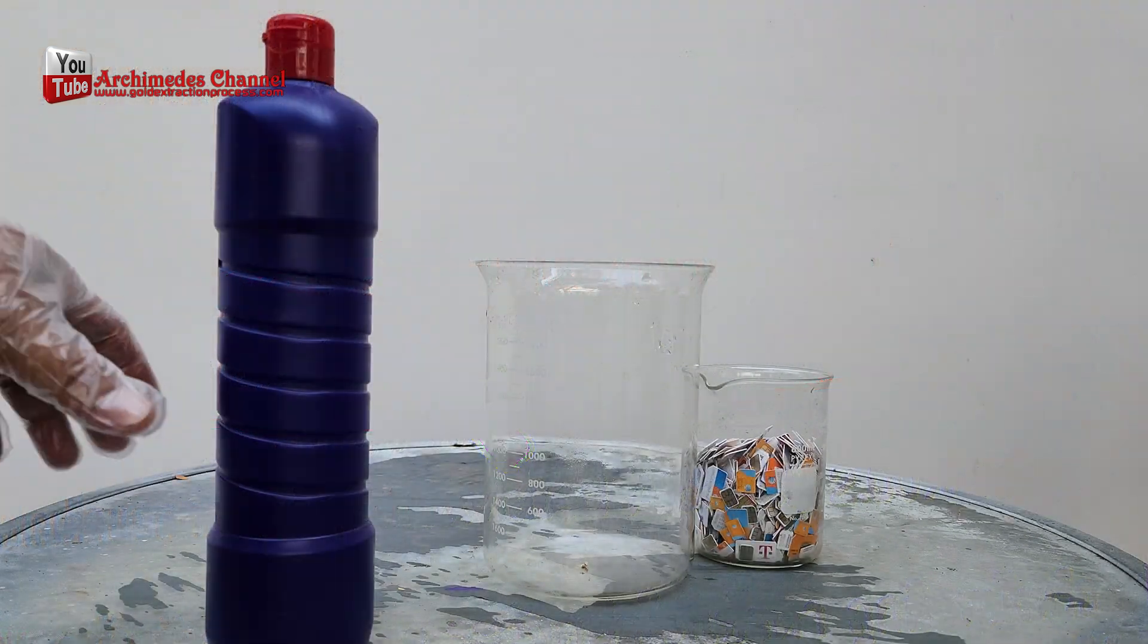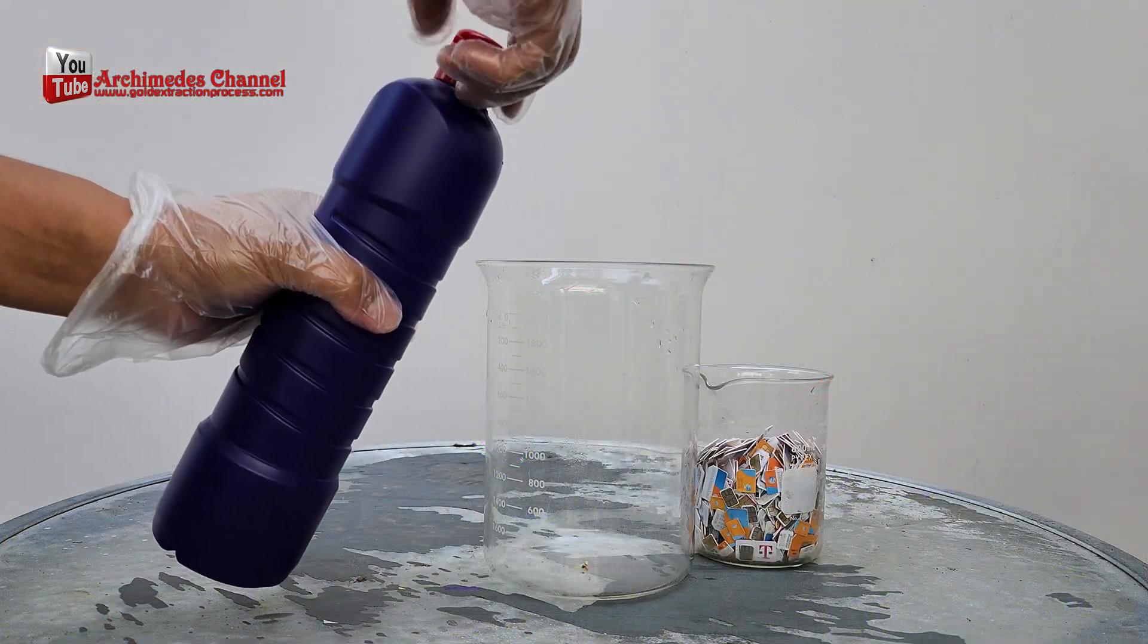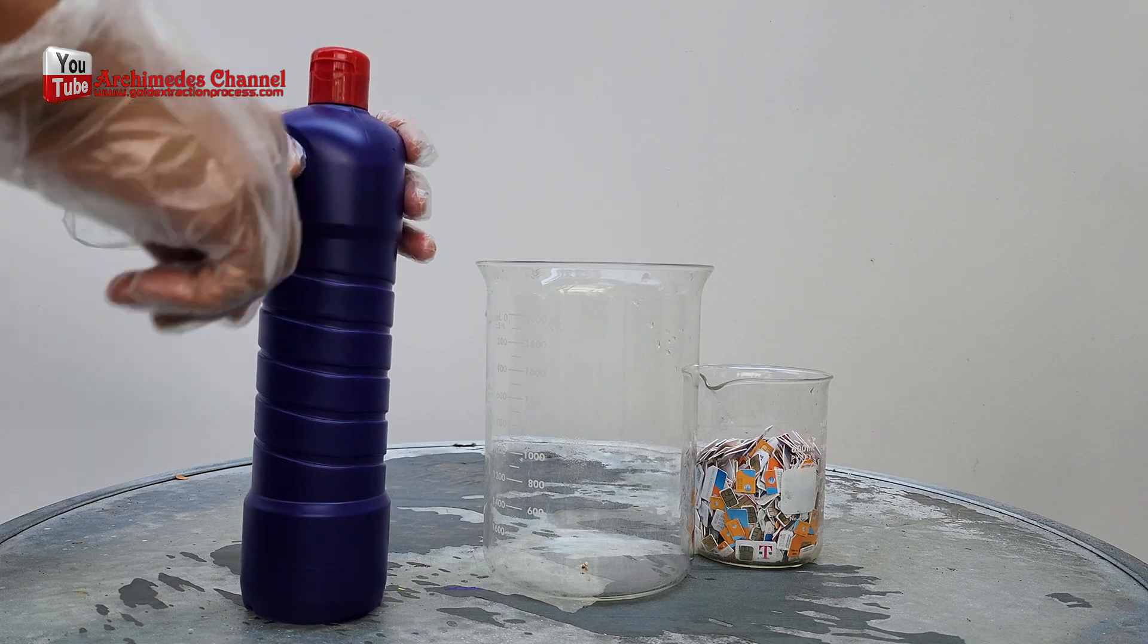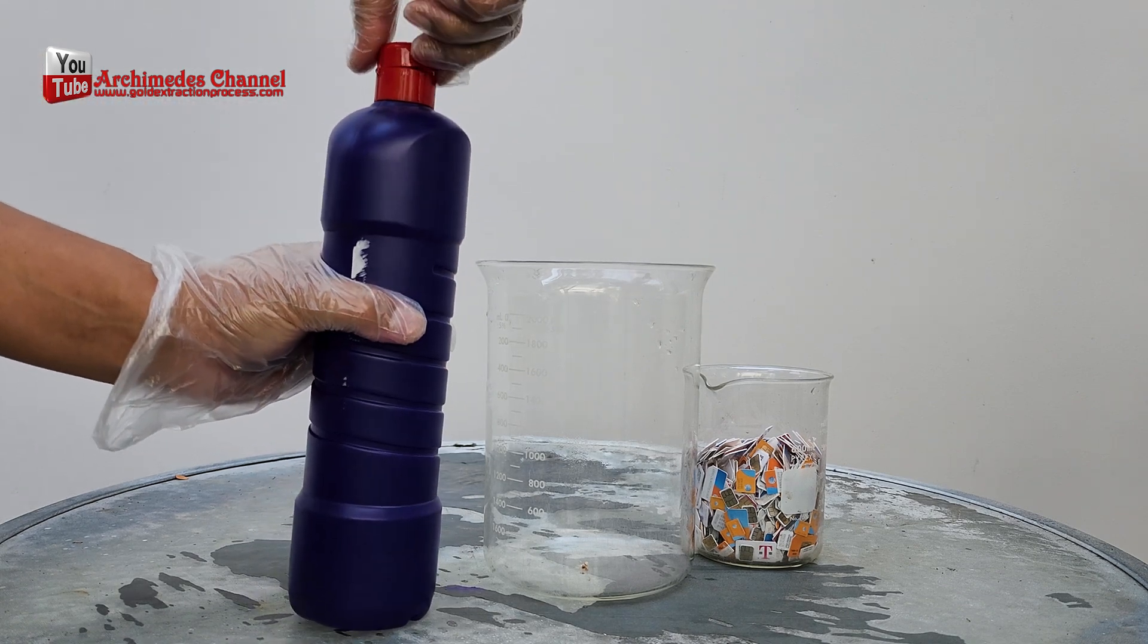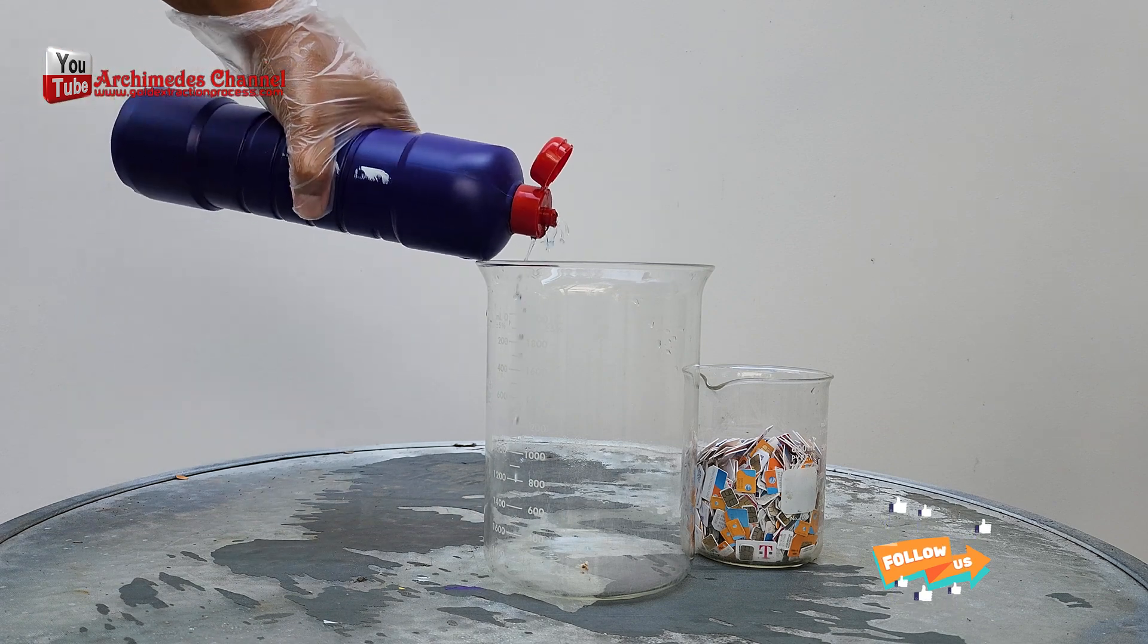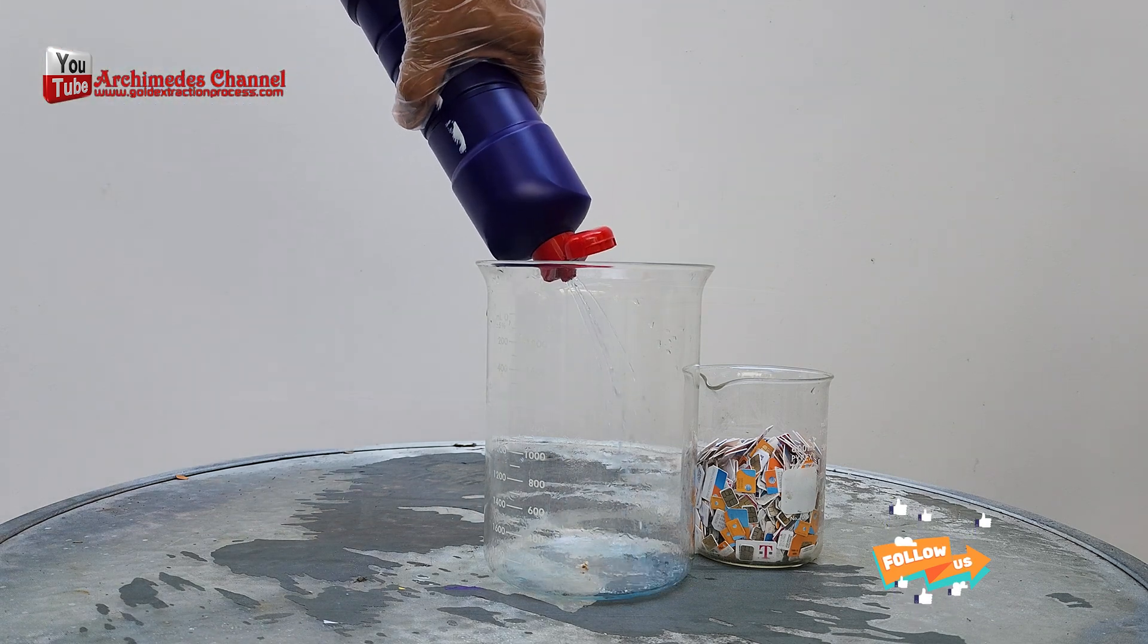Put the toilet cleaner into the beaker, then insert the SIM card.